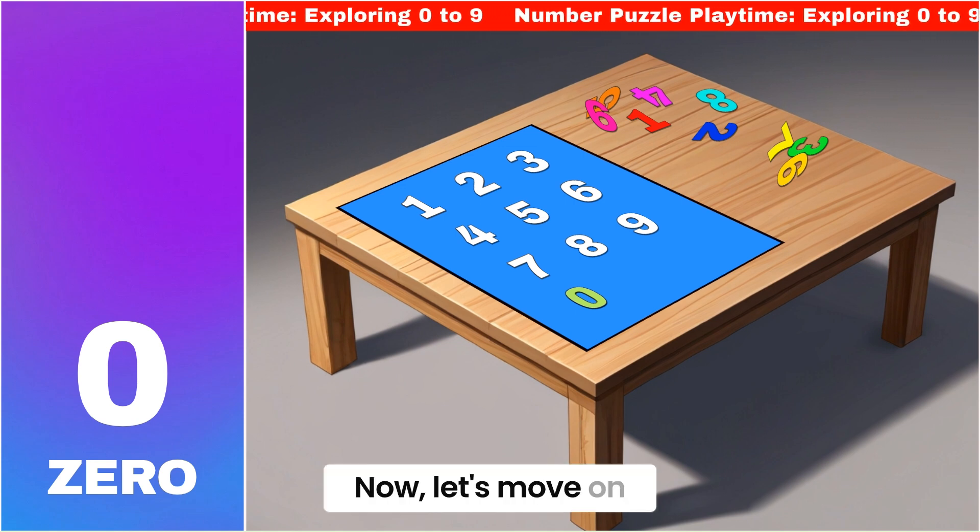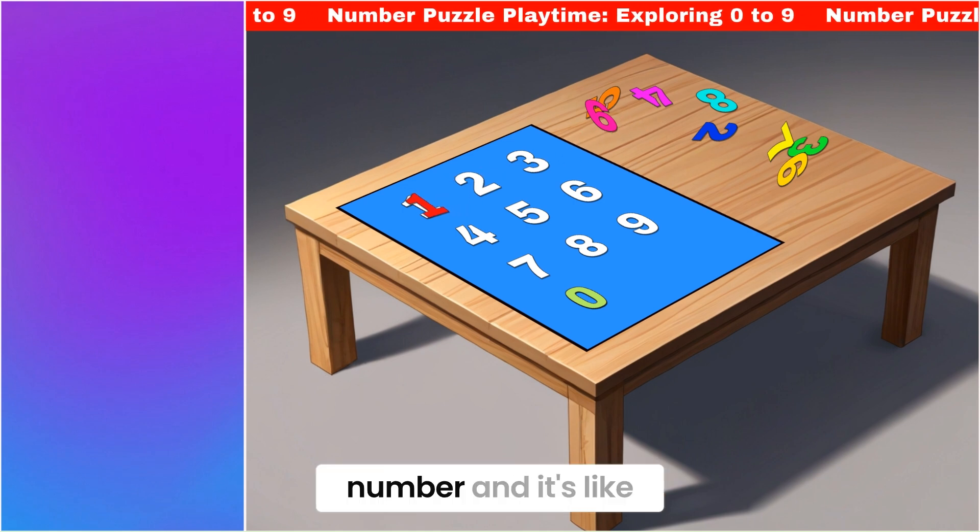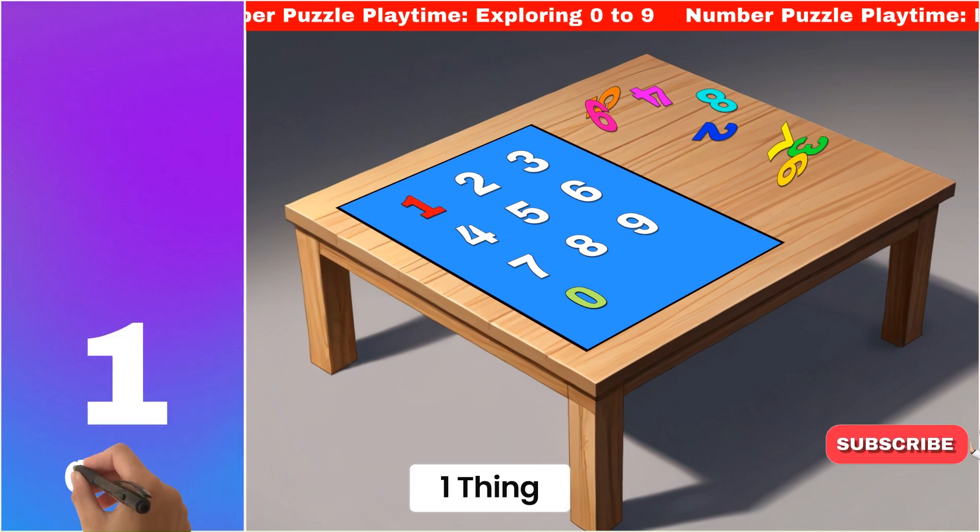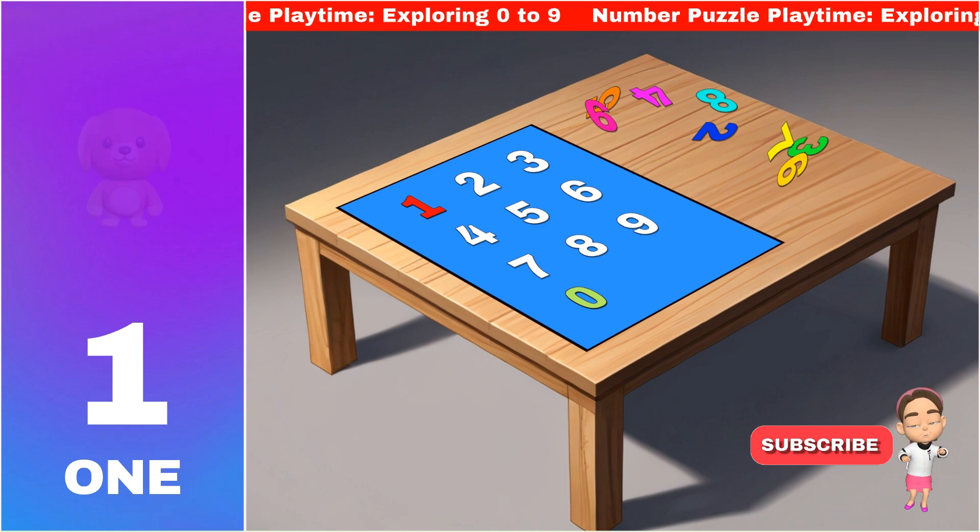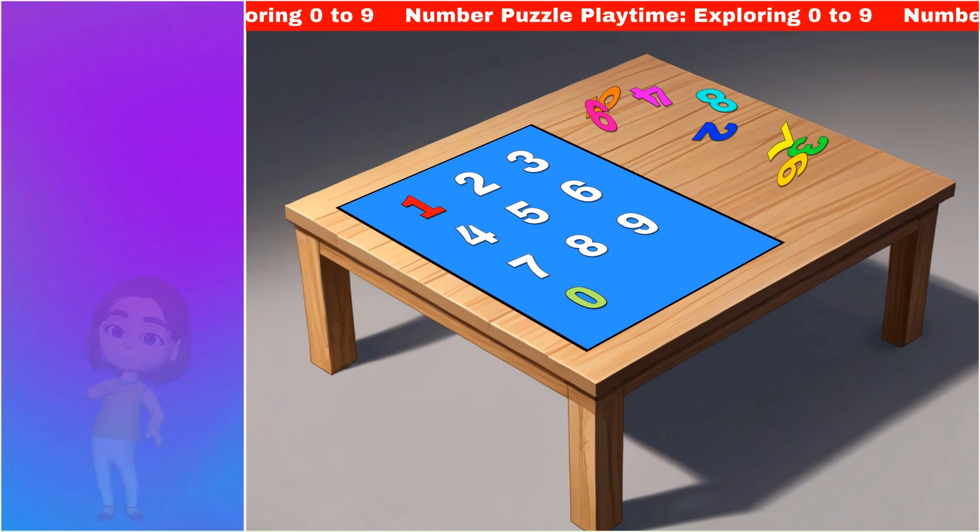Now, let's move on to the number one. One is the first number, and it's like when we have just one thing. Like one dog. Awesome!